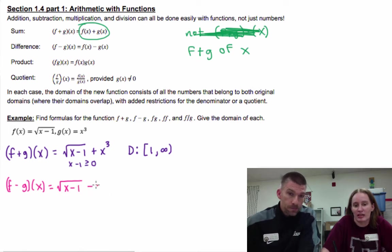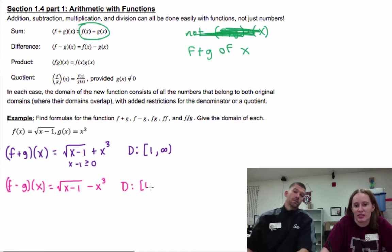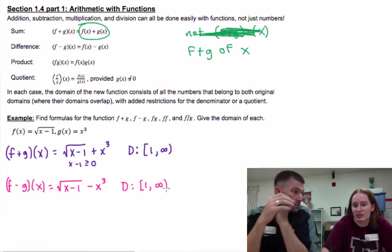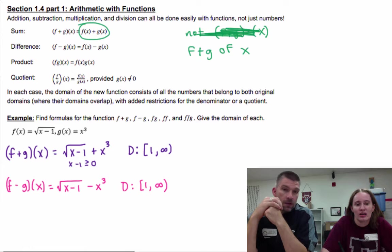Now we've got square root of x minus one minus x cubed. That's it. Well, the domain, we really didn't change anything, nothing's different. If x cubed had a domain issue we would have to kind of mess with this a little bit more, it'd be trickier, but we would deal with it if we had to. f times g: